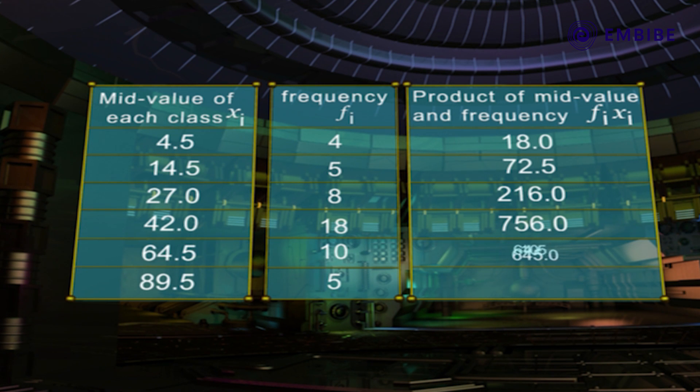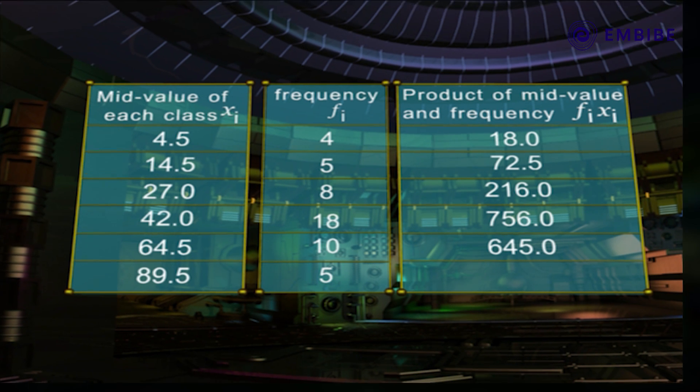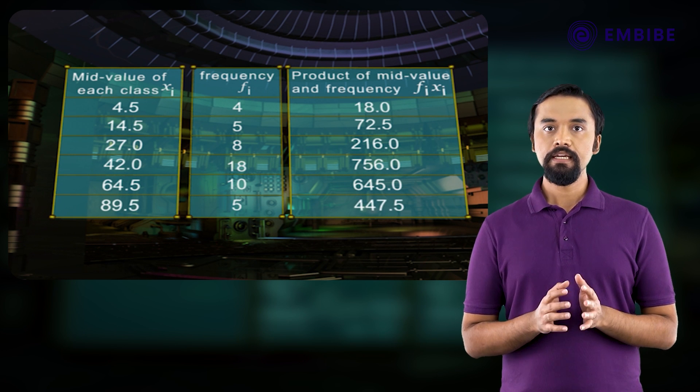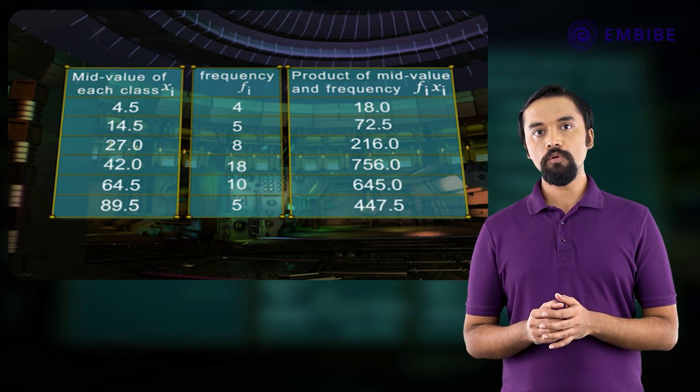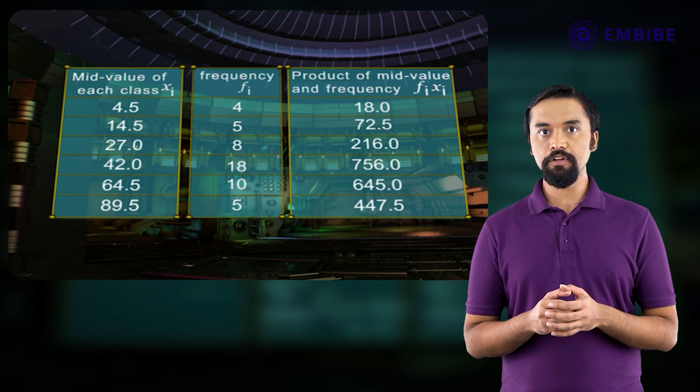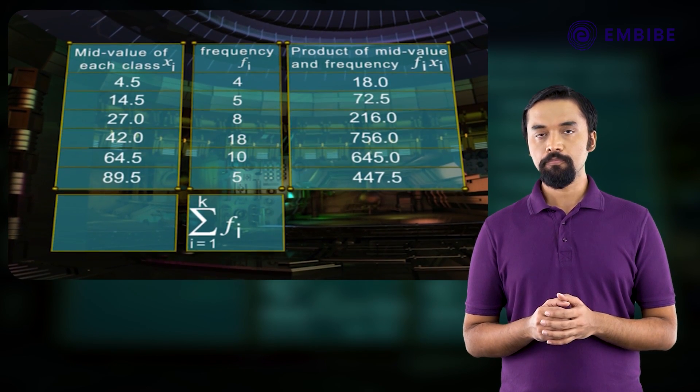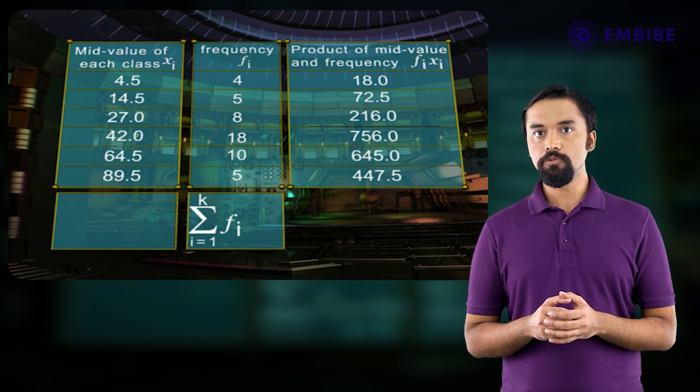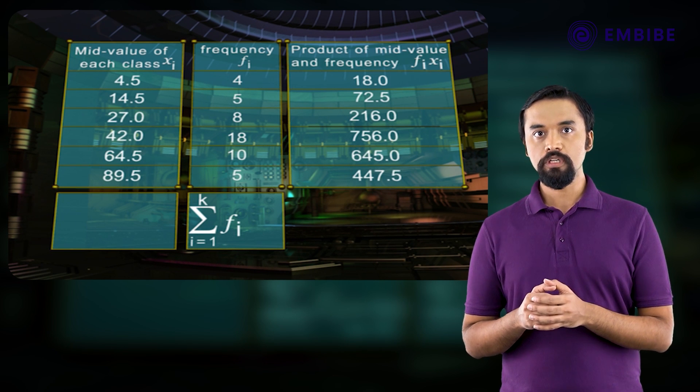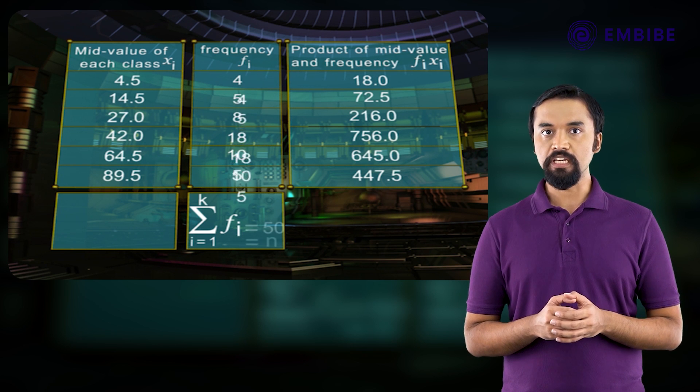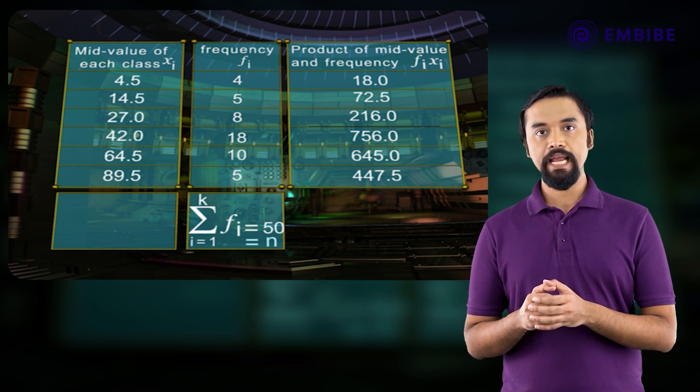64.5 into 10 equals 645.0. 89.5 into 5 equals 447.5. Sigma fᵢ, i is equal to 1 to k, is equal to 50, is equal to n.